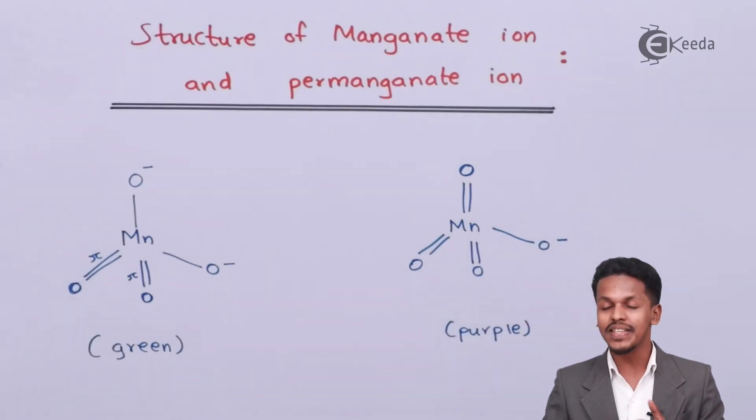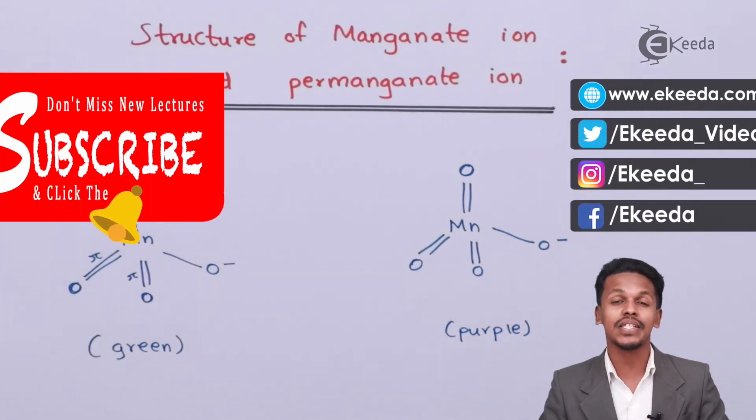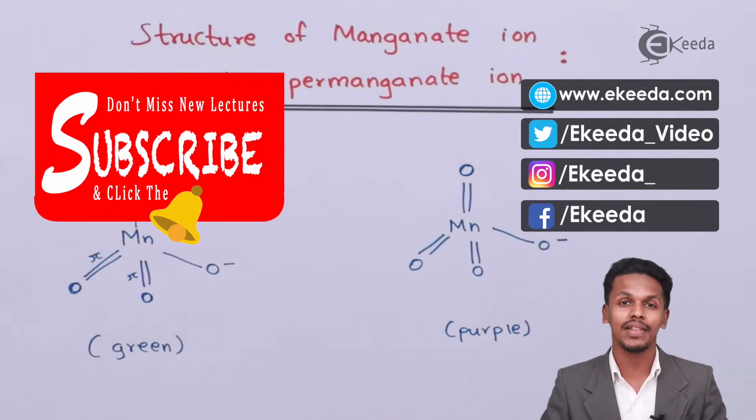Based on that, we have discussed the structure as well as the magnetic property based on oxidation state and electronic configuration. Thank you friends for watching this video. I hope you have understood this video clearly and I hope I'll see you next time. Till then, don't forget to subscribe to Ekeeda channel. Thank you so much.